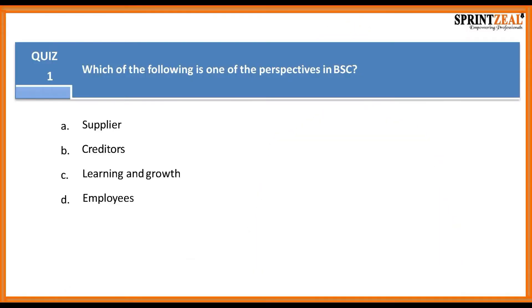So let's see what we've learned thus far. Question one: Which of the following is one of the perspectives of a balanced scorecard? Is it supplier, creditors, learning and growth, or employees?